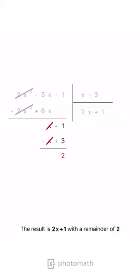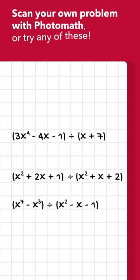The result is 2x plus 1 with a remainder of 2.